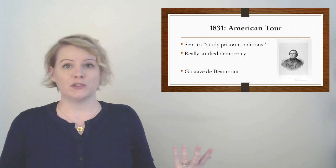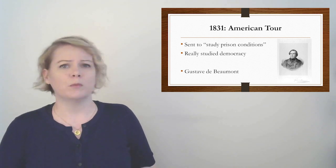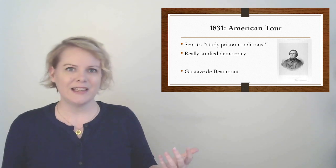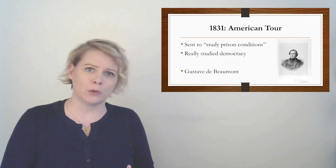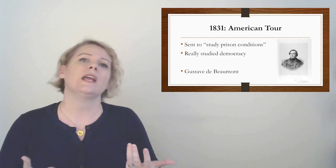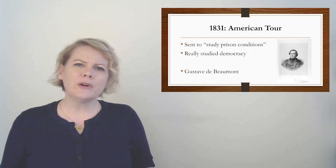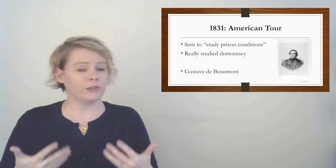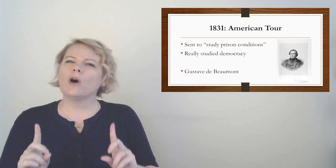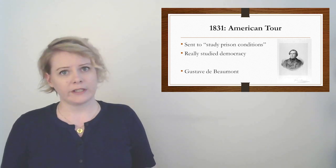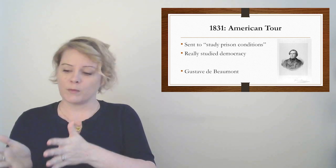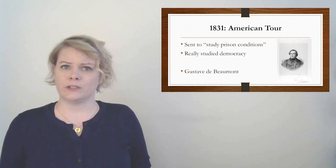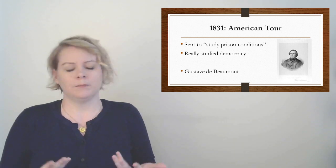They framed it as him doing some research. Basically they wanted him to go to America and study prison reform. I mean, they didn't really, they just wanted him to go away. But that's what he said he was going to do. So he went on this American tour in 1831. He was sent to study prison conditions and really studied democracy. He brought his best friend, Gustave de Beaumont. He was also really interesting. He was an author as well. And they just toured all around America. And they talked to all sorts of people. They talked to working people, and they talked to aristocrats, and they talked to factory people, and they talked to farmers.